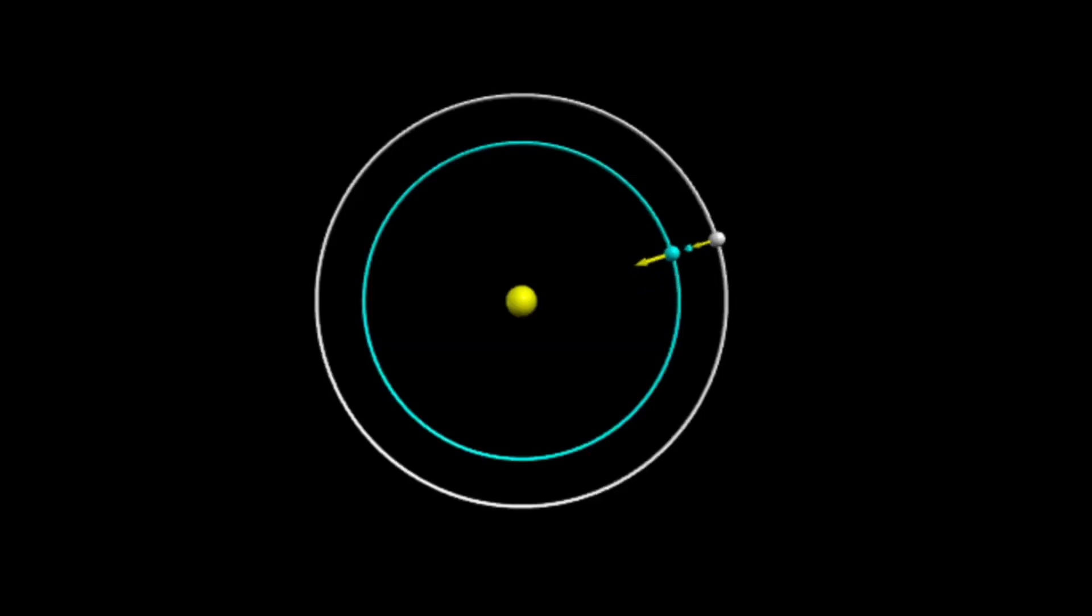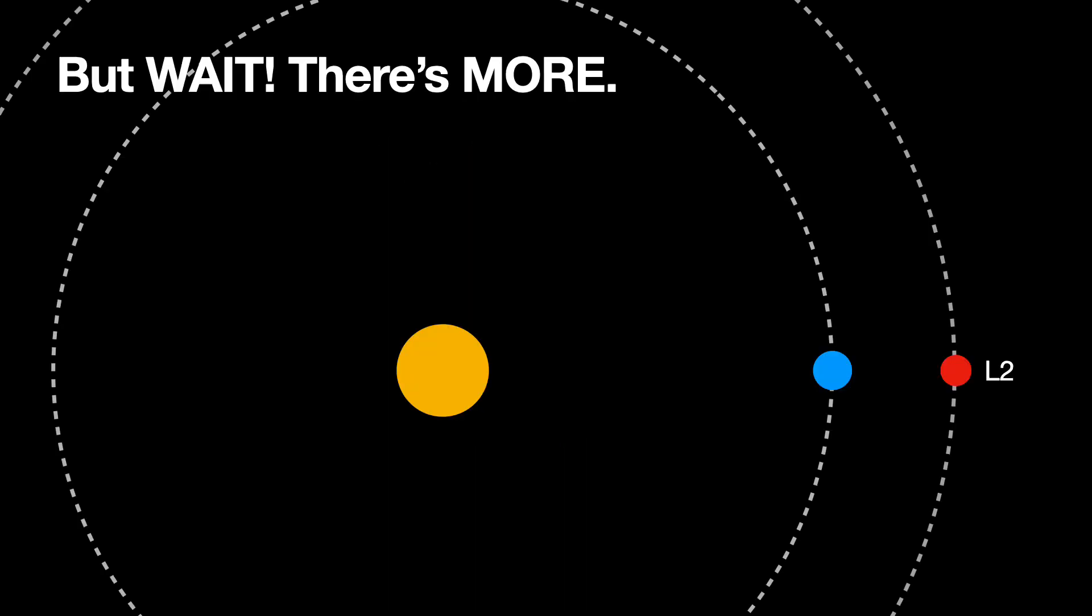And this is what it would look like. So here's the Earth, the cyan one moving around. The yellow is the gravitational arrow. The gray dot is the space telescope. It has two forces acting on it so that it moves with the same angular velocity. But wait! There's more.